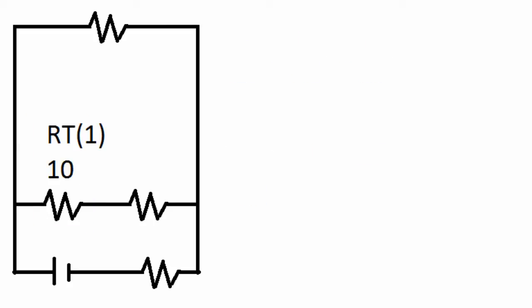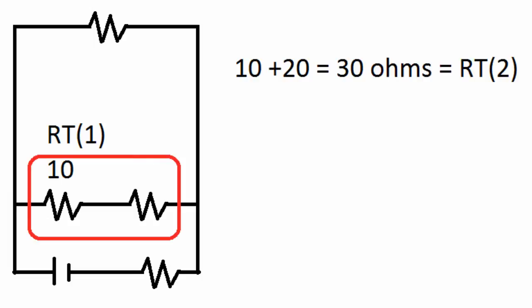As you can see here, we condense those two resistors into RT1 and that is equal to 10 ohms. Now we're going to take those two resistors that are in series and we're going to add them together. The RT1 is 10 plus the 20 ohm resistor equals 30 ohms for RT2.